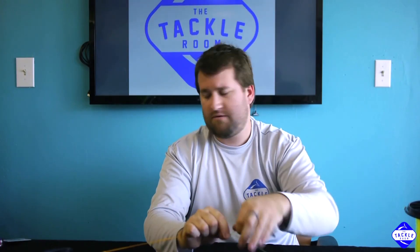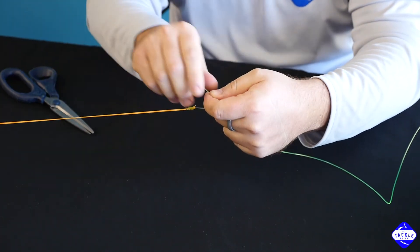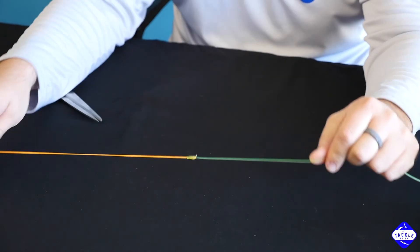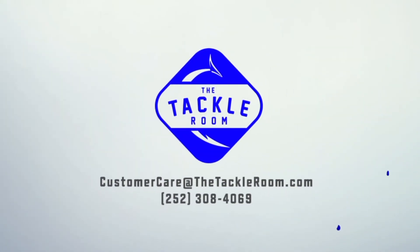Once the knot is cinched down you can cut away this tag end just as flush as you can get. And that is all there is to a perfected Albright knot.